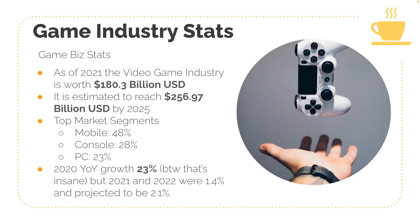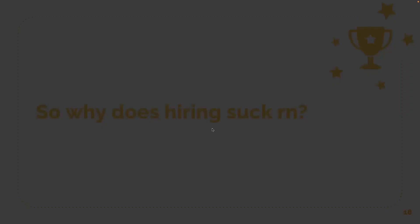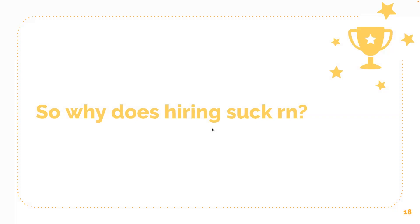The top market segments: 48% of all game revenue is made on mobile devices, console is at 28%, and PC is at 23%. The remaining 1% is from arcade games. Year-over-year growth in 2020 was 23%, which is absurd — eight or nine percent industry growth per year is considered good. So 23% is crazy, but we paid the price for that, and we are currently still paying the price. In 2021 and 2022, growth was only 1.4% and 2.1%.